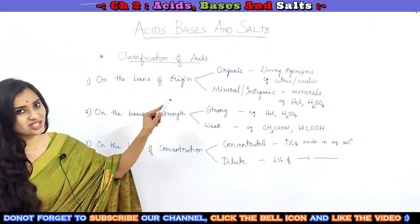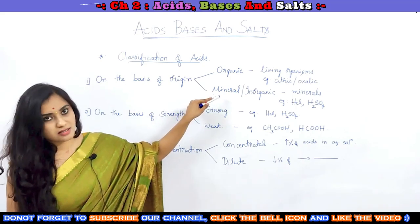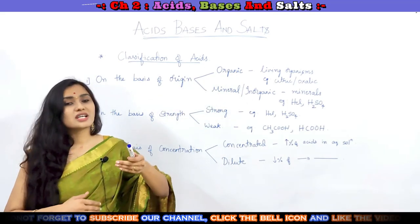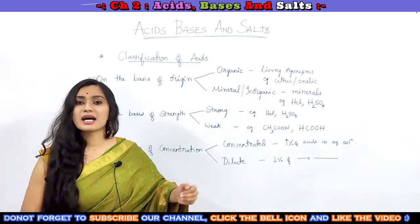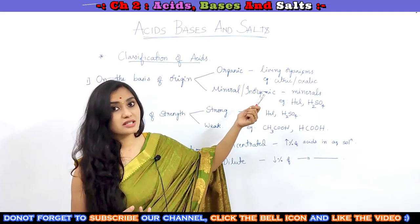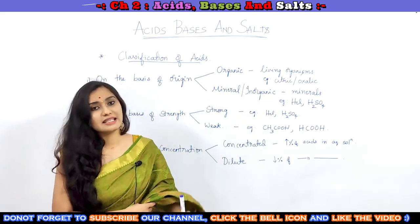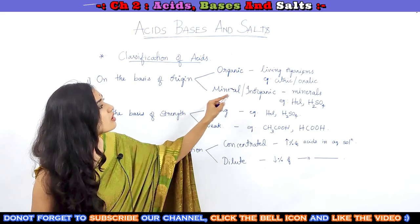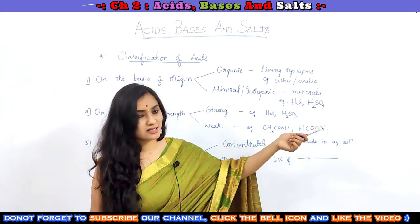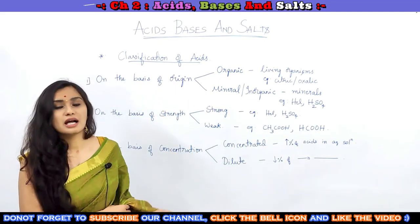Now let us discuss about the classification of acids. On the basis of origin, we have classified acids into two types: one is organic acids, another one is mineral acids, or inorganic acids. Organic acids are those which are derived from living organisms such as plants or animals. For example, citric acid, which is found in citrus fruits like lemons, oranges, and oxalic acid — these are examples of organic acids. Coming to mineral or inorganic acids, these are derived from minerals. For example, hydrochloric acid or sulfuric acid — these are inorganic acids.